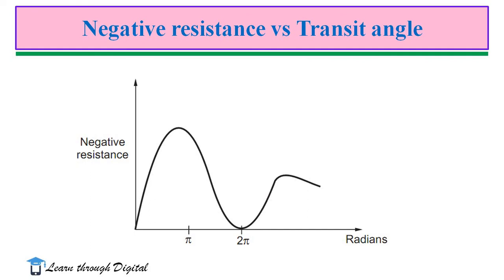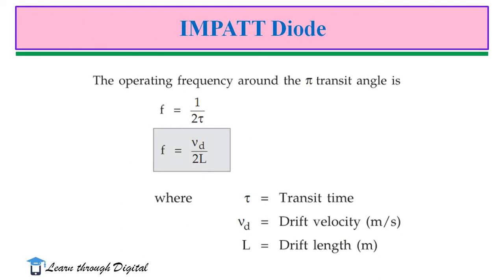The field applied to the IMPATT diode is about 5 kV per cm. The total field across the diode is the RF voltage superimposed on a high DC voltage. When a P-N junction is reverse biased in the depletion layer, avalanche breakdown takes place. The avalanche current lags the applied field by pi/2 radians. The carriers constituting the avalanche current drift to their respective electrodes: holes to the negative electrode and electrons to the positive electrode. The additional phase shift caused by the drift of carriers makes the device exhibit negative resistance.